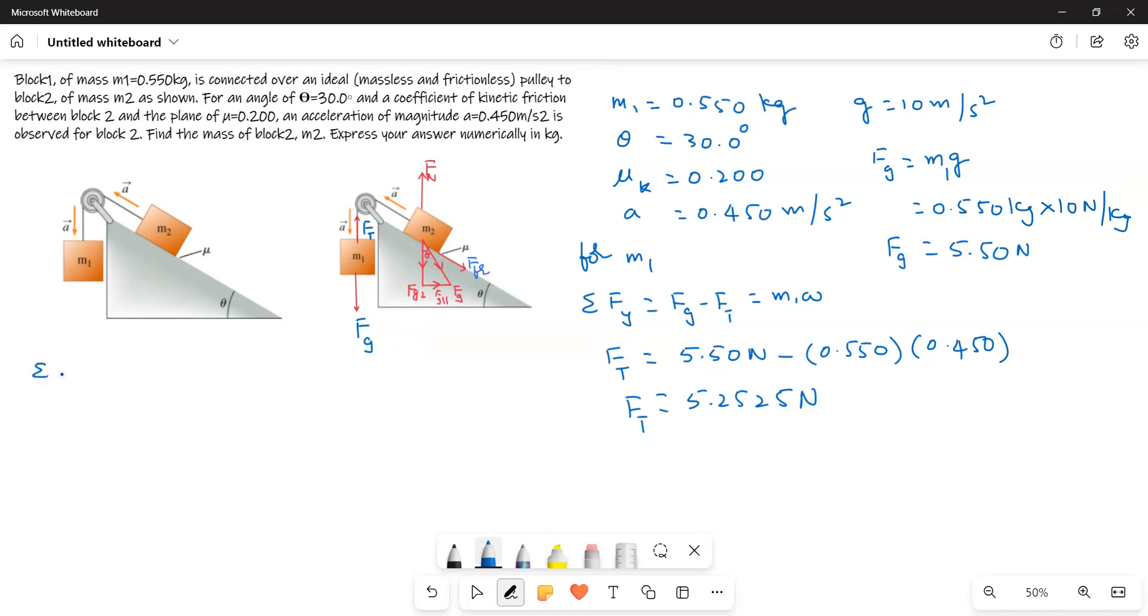Now, I will write the equation here for the x-axis. Sigma Fx is equal to, here Ft is in this direction, so I will take this as positive. So Ft minus Fg parallel minus Ff is equal to M2a. We have to find out M2. Now, Ft we know.